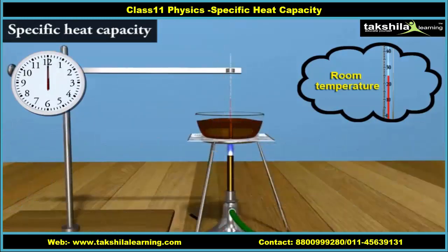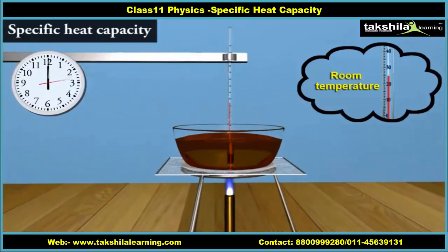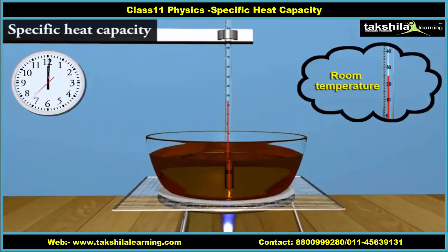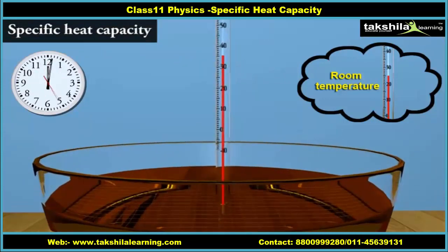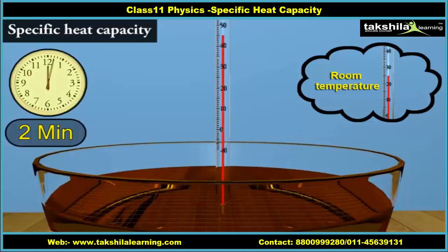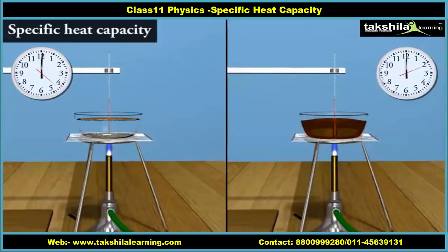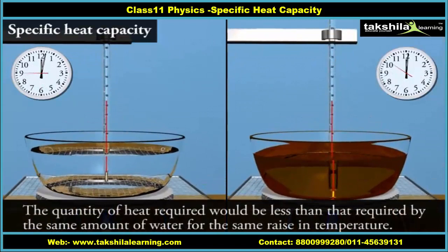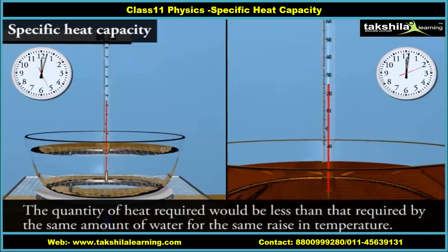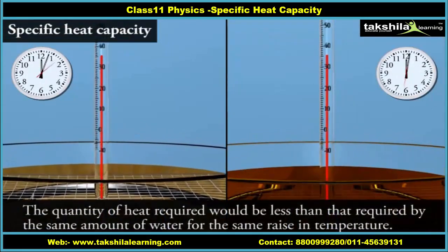In the third step, in place of water, heat the same quantity of some oil — say, mustard oil — and raise the temperature again by 20 degrees Celsius. Note the time using the same watch. You will find the time taken will be shorter, and therefore the quantity of heat required would be less than that required by the same amount of water for the same rise in temperature.